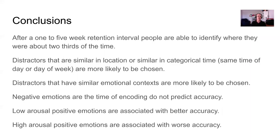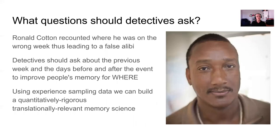In conclusion, after a one to five week retention interval, people are able to identify where they were about two thirds of the time, replicated across both experiments. Distractors similar in location or categorical time are more likely to be chosen, and distractors with similar emotional context are more likely to be chosen. Negative emotions at encoding did not predict accuracy, but lower arousal positive emotions are associated with better accuracy and higher arousal positive emotions with worse accuracy.